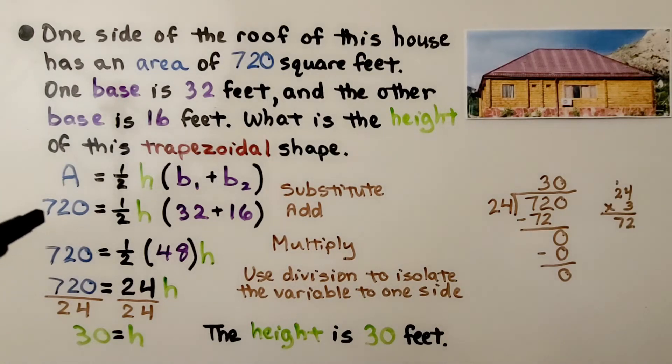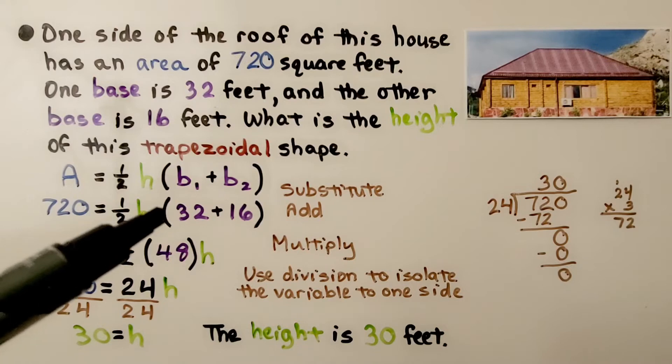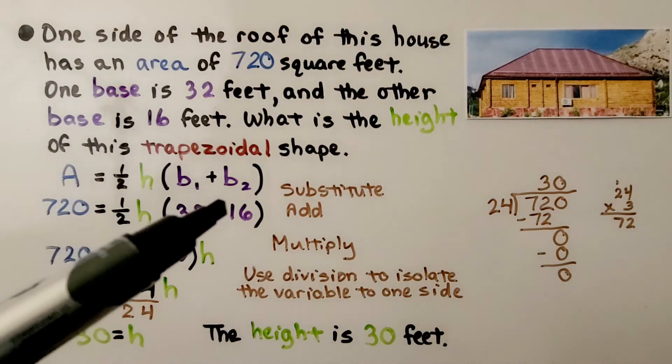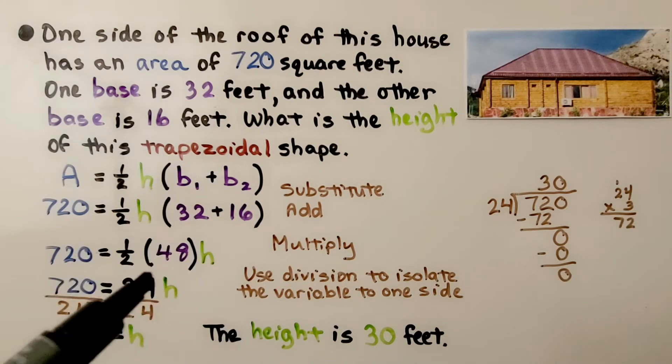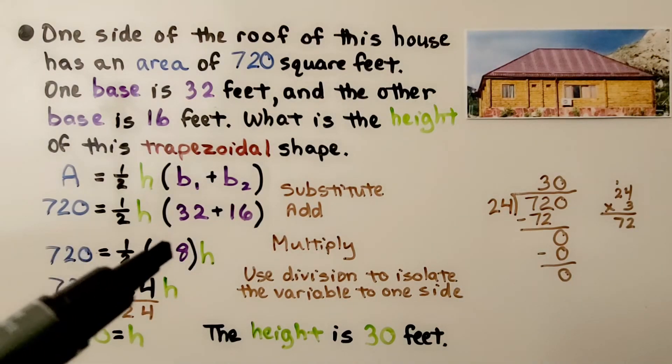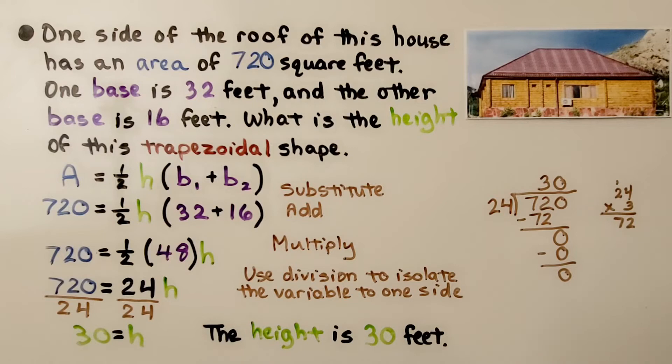We have our formula for the area of a trapezoid. The area is 720. We don't know the height, but we do know that base 1 is 32 and base 2 is 16. We add these together and get 48. We can multiply half times 48 to get 24. Now we have 24h, and we can use division to isolate the variable. We divide both sides by this coefficient, 24.